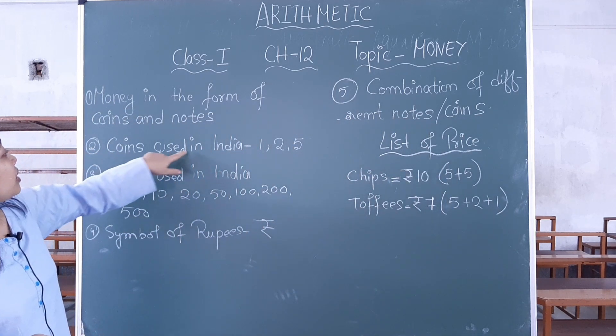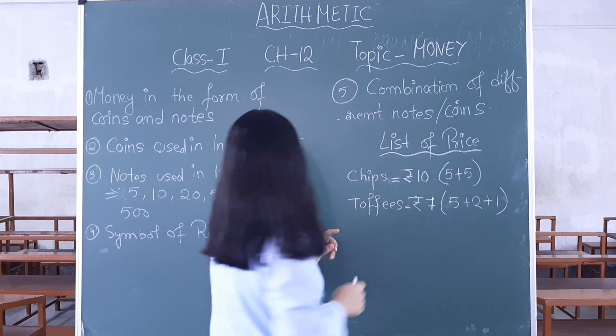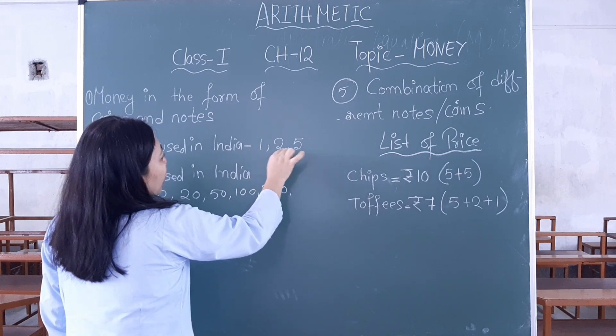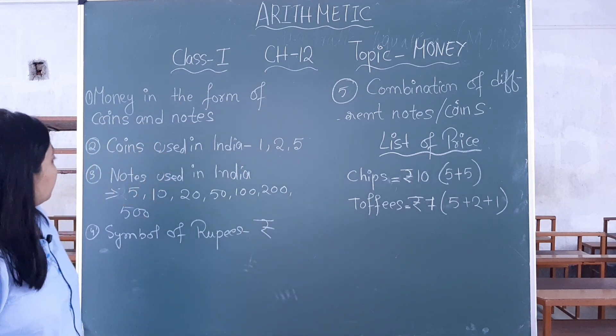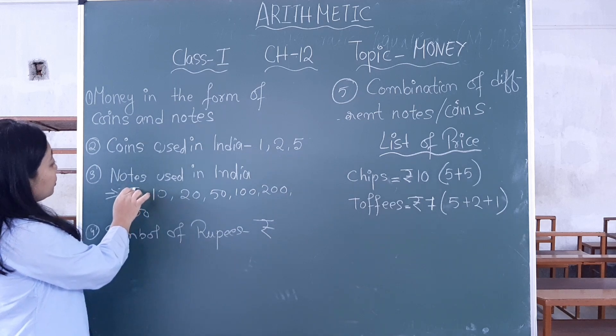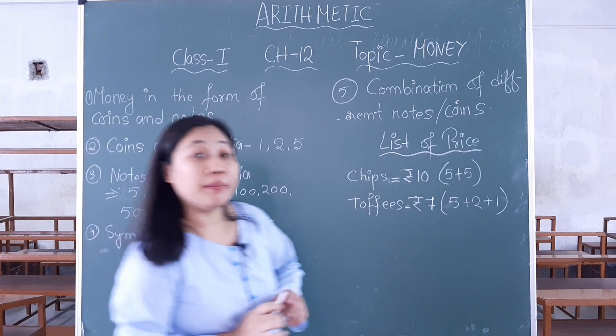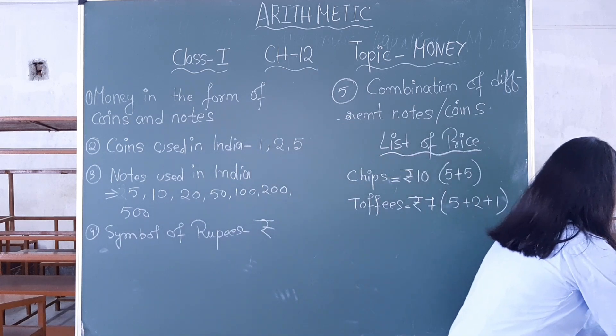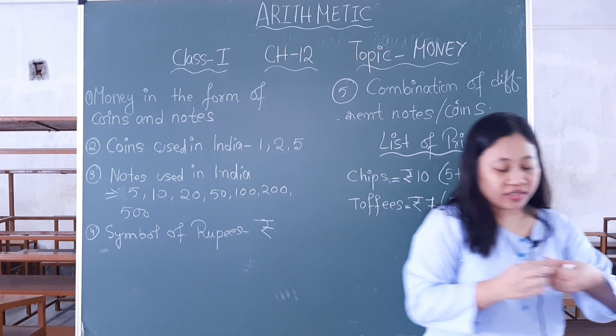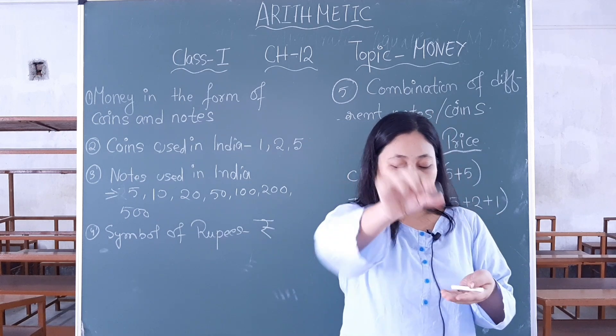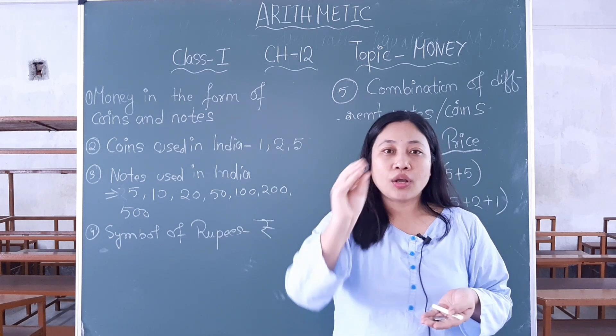Coins used in Indian currency. The coins which we use in Indian currency are 1, 2, and 5 rupees coins. Coins are made of metal. Here you can see the 5 rupees coin, 2 rupees coin, and 1 rupee coin.